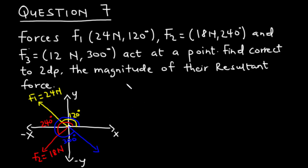To find the magnitude of their resultant force, we first resolve the individual forces F1, F2, and F3 into their column vector form, after which we sum them up to get the resultant force, and then find its magnitude.